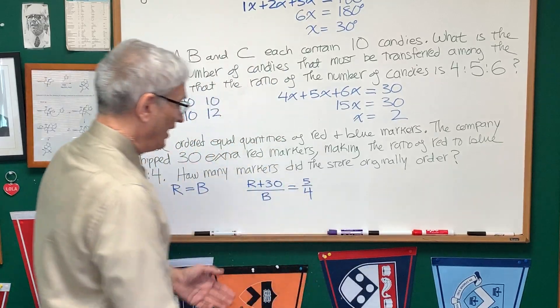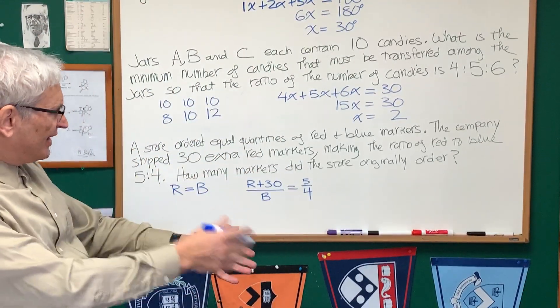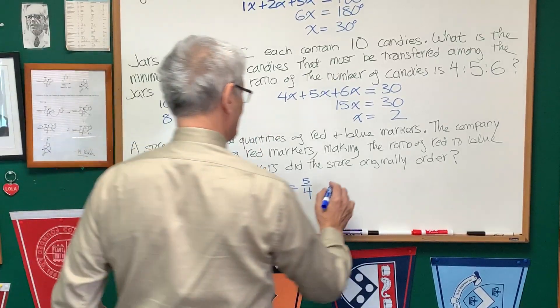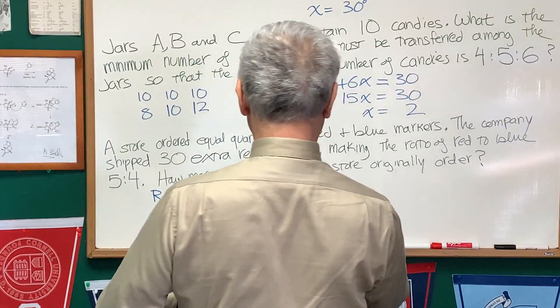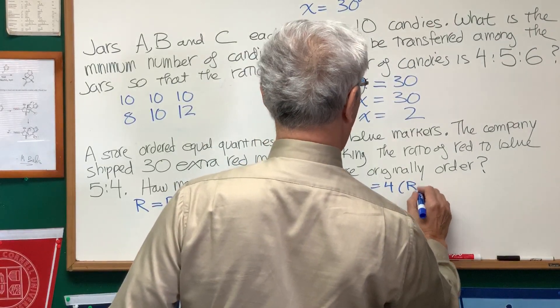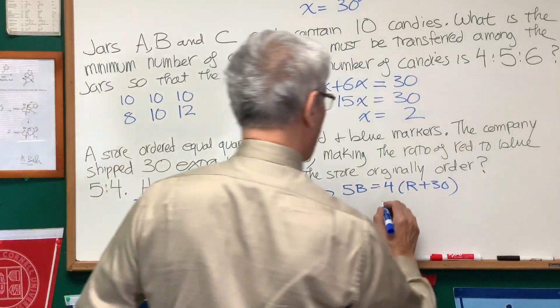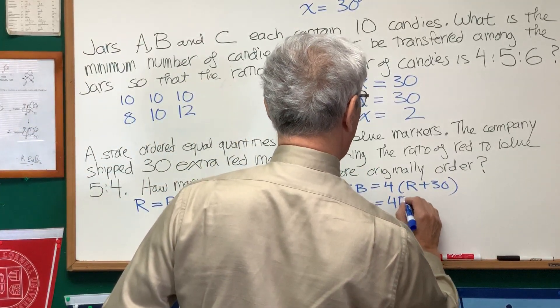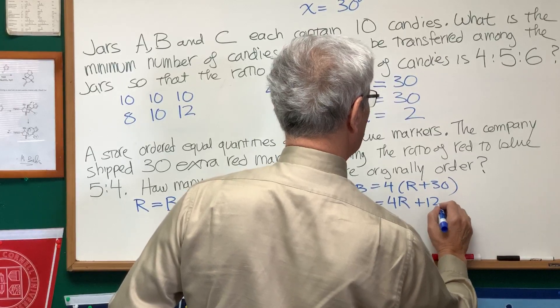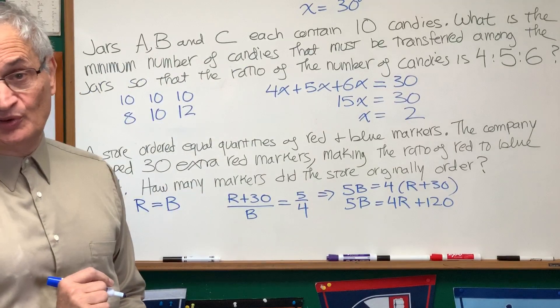So, here we have a proportion, and let's solve it by the standard cross-multiplication. So, this is going to lead us to 5 times B equals 4 times (R plus 30), right? Let's distribute that out, 4R plus 120, 5B equals 4R plus 120.